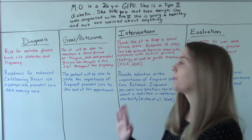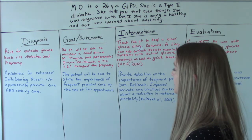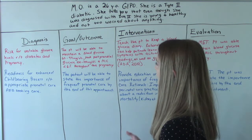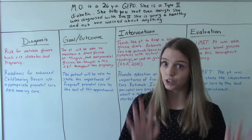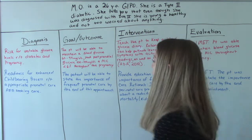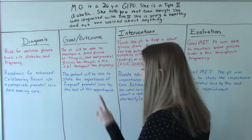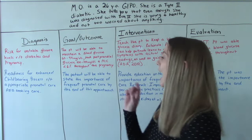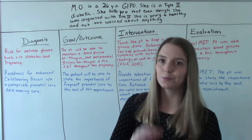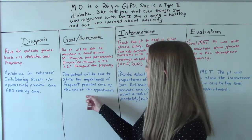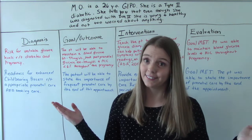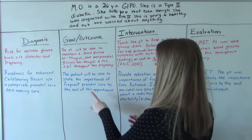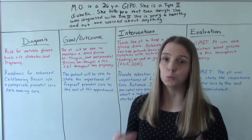So our goal: the patient will be able to state the importance of frequent prenatal care by the end of this appointment — and that timeline is huge. She needs to do this by today, before she leaves this room, before she leaves this clinic. I want to know that she understands why it's important, because if she doesn't, you might not see her again — she might not come to a next appointment. So she needs to know by the end of the appointment that prenatal care is really important.